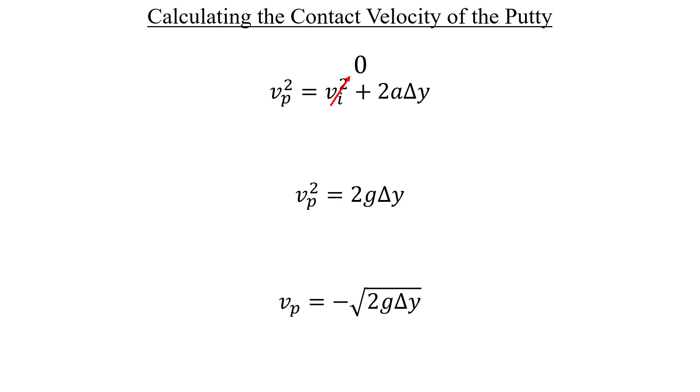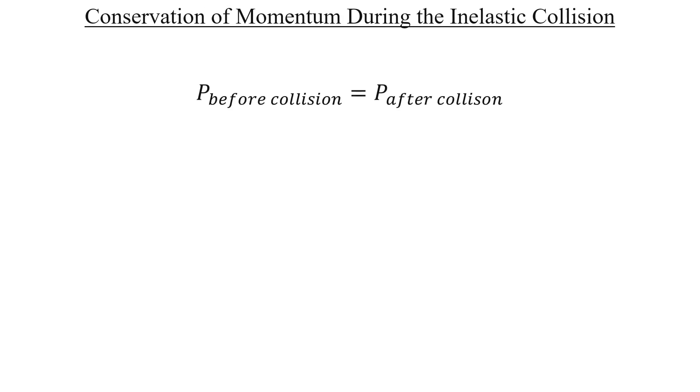Since the putty collides with the frame and sticks to it, what we have here is essentially an inelastic collision, which means that momentum is conserved during the collision and then mechanical energy is conserved after. Let's start with momentum. Instantly before the collision, all of the momentum will come entirely from the putty, since the frame isn't initially moving, and the momentum instantly after the collision will come from the combination of both objects. There's a negative on both sides here since the putty's contact velocity is downward, and so is the velocity of both objects after, but we can cancel it out on both sides for now.